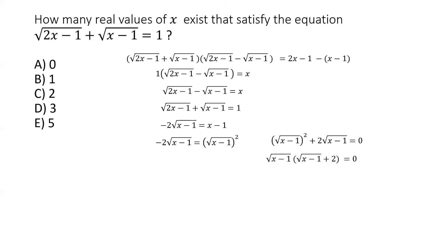We factor out √(x−1) as common, leaving √(x−1) × [√(x−1) + 2] = 0. There are two possibilities: either √(x−1) = 0, giving x = 1, or √(x−1) = −2, which when squared gives x − 1 = 4, so x = 5. We have two potential roots: x = 1 or x = 5.